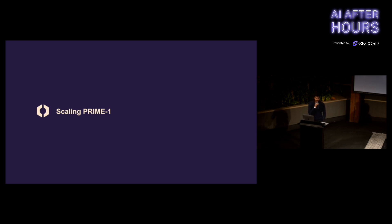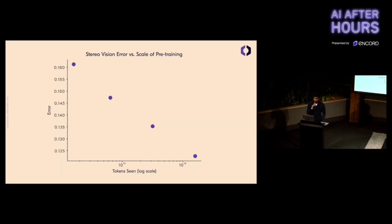All the improvements I presented up until now were great, but what really excites me is Prime's ability to scale. A lot of recent work in foundation models has focused on establishing scaling laws, basically power laws between data and performance. Here we see the scaling law for Prime. On the x-axis, you see the amount of data in tokens in log scale. On the y-axis, you see the downstream task error for the stereo vision task. And we can see this nice, almost linear relationship.